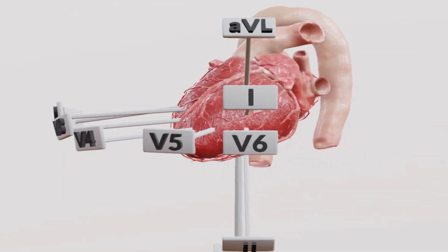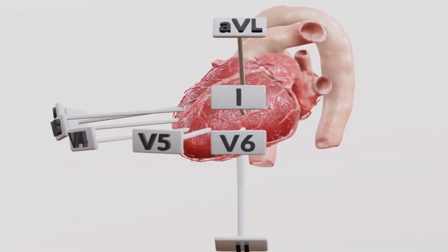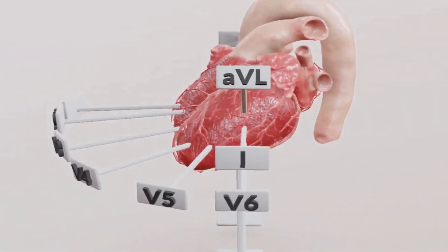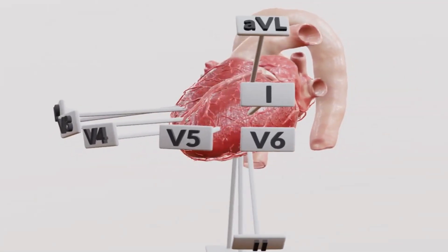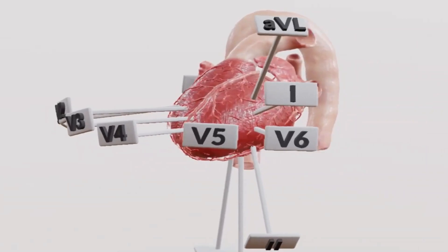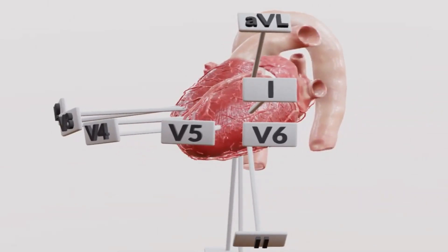Let's look closer at these. Lead 1 and AVL are limb leads that give us a high lateral view of the lateral wall — like looking at the side of the heart from a slightly higher angle. So Lead 1 and AVL: high lateral view. Then we have V5 and V6, chest leads placed further out to the side. These give us a low lateral view, looking at the lateral wall from a lower angle closer to the heart itself. So V5 and V6: low lateral view.